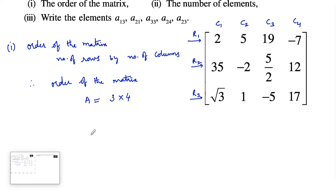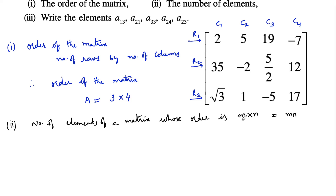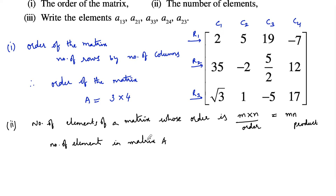Coming to the second one: the number of elements. For a matrix of order m by n, the number of elements is equal to m × n, that is the product of the number of rows and columns. Here in this matrix, we have 3 rows and 4 columns, so 3 × 4 = 12. There are 12 elements in this matrix.